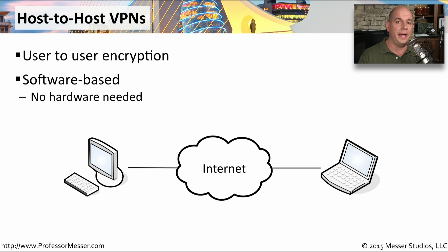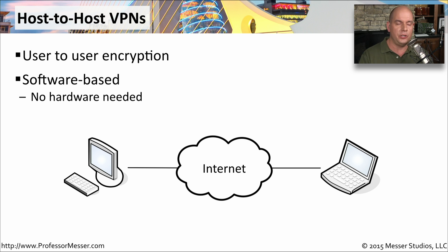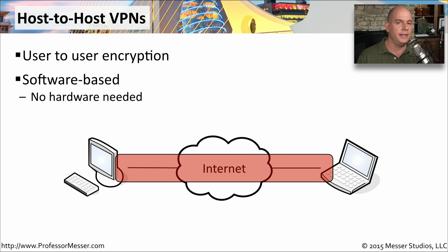In the previous two examples, we had VPN concentrators and VPN endpoints — generally pieces of hardware designed to perform VPN functionality. But you don't have to have hardware to make this happen; you can do it all in software. You could even connect two devices together using software in something called a host-to-host VPN. This is a user-to-user communication with no additional hardware in the middle — all you need is compatible software on both sides, and these two devices will create an encrypted tunnel between them.